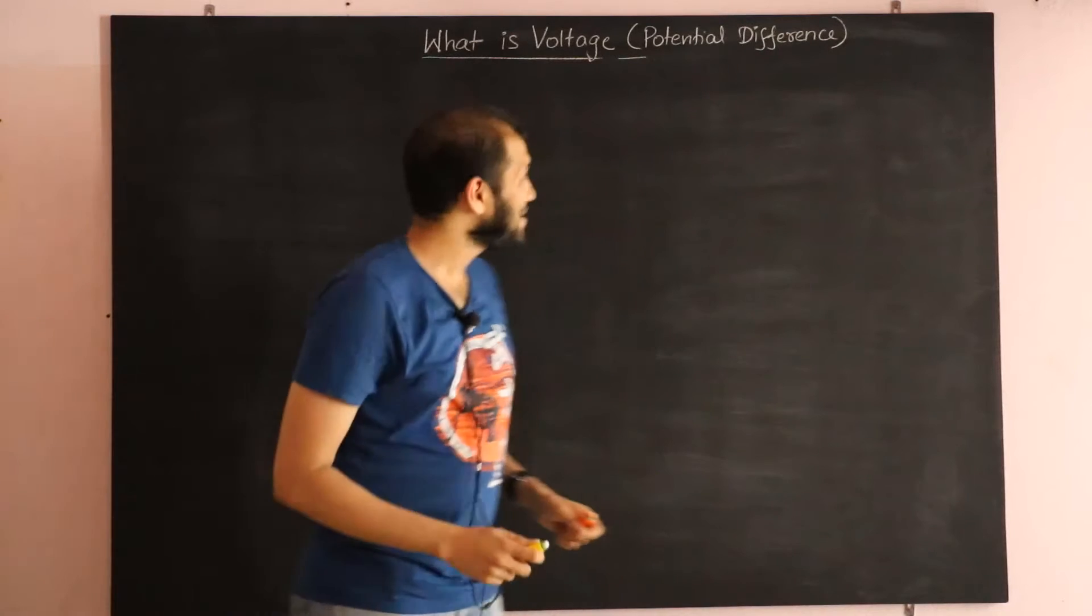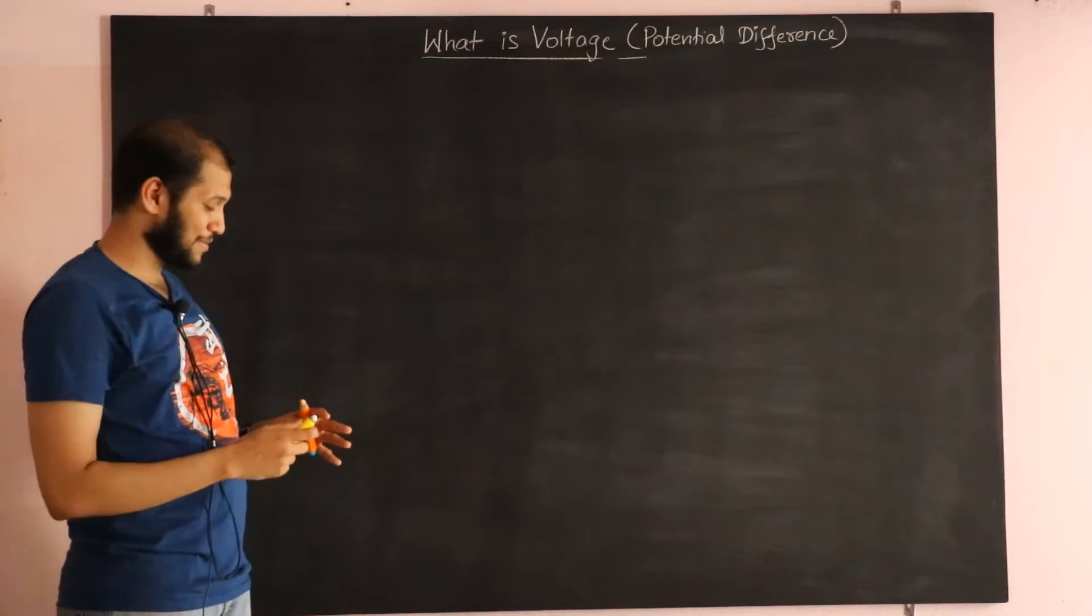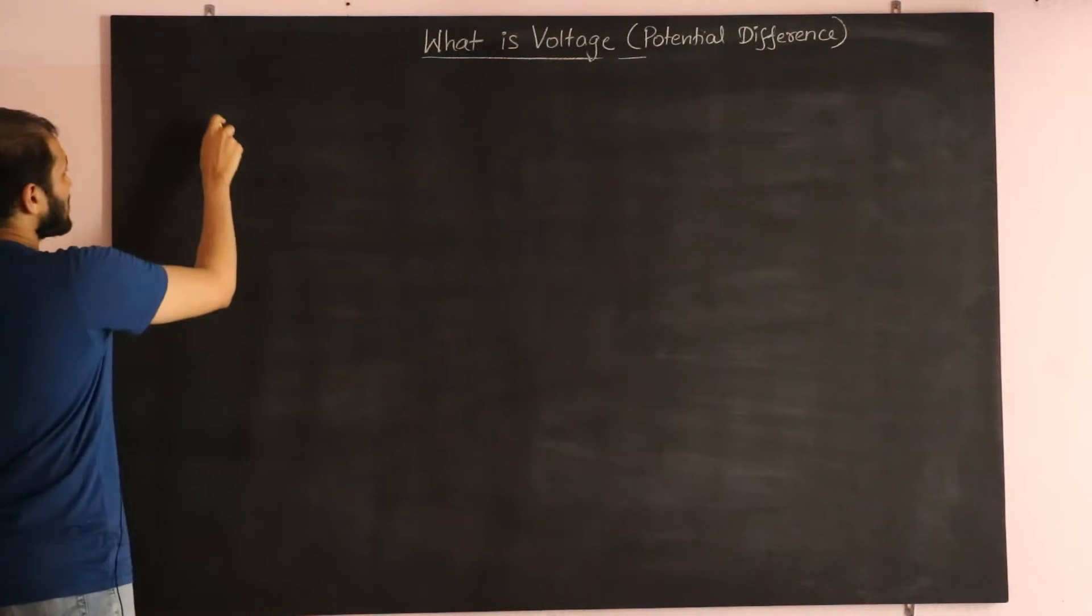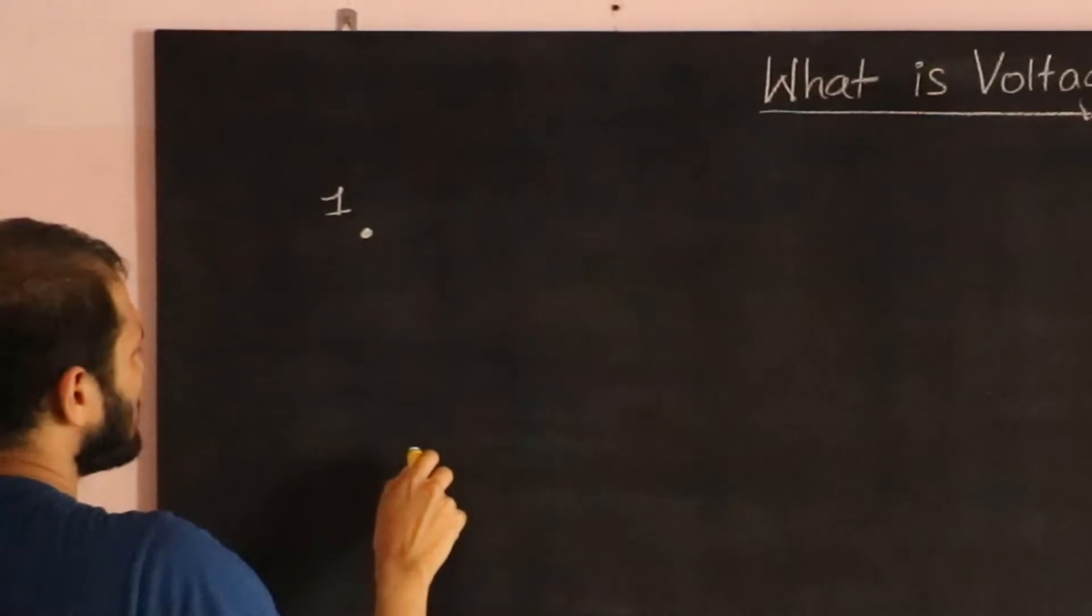Alright, so I'm going to make you understand potential difference directly by taking an example. Imagine we have two points in space. So this is point number one and here is point number two.